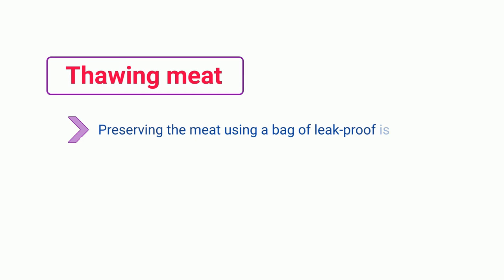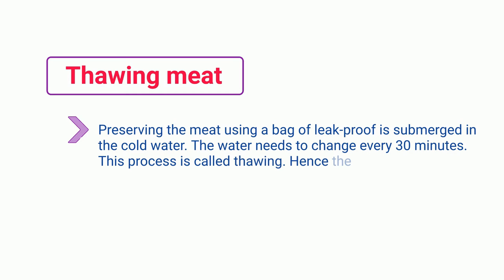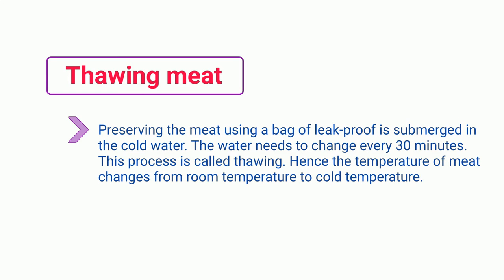Thawing meat: to preserve meat, it is sealed in a bag and submerged in cold water. The water needs to be changed every 30 minutes. This process is called thawing, and the temperature of the meat changes from room temperature to cold temperature.